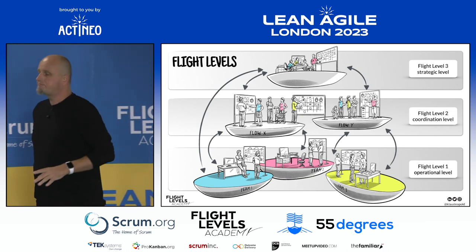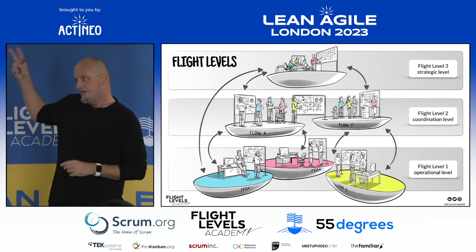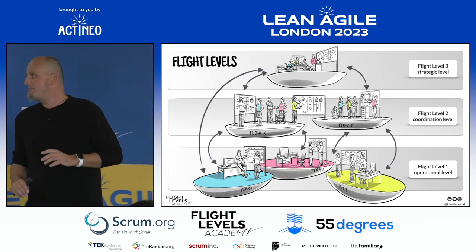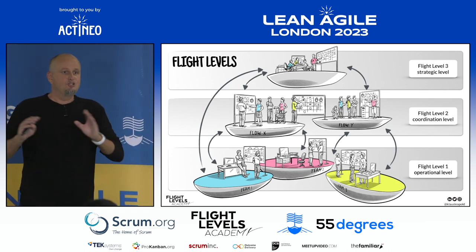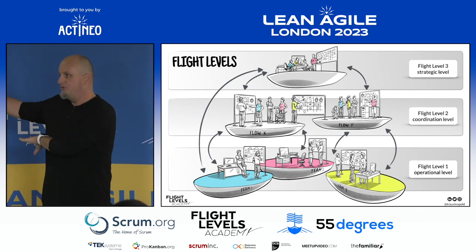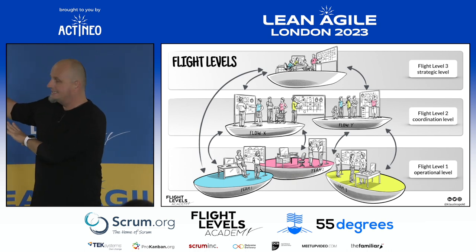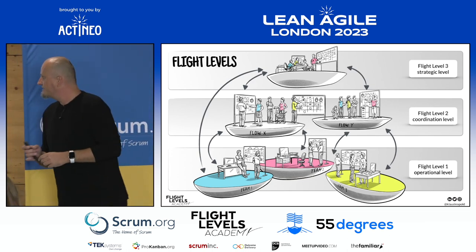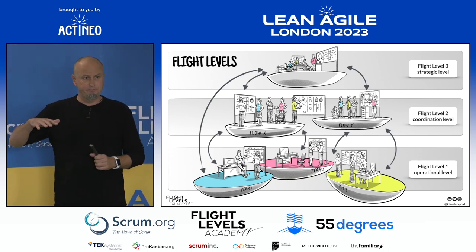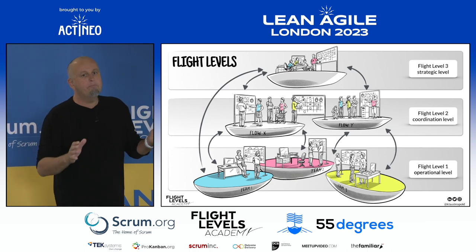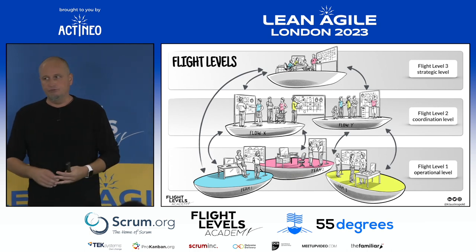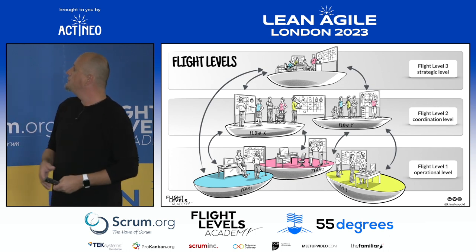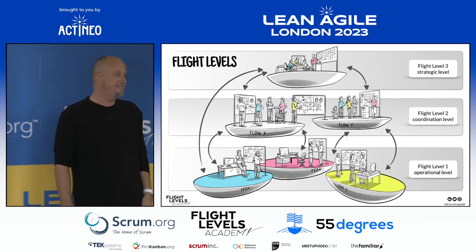There are two common misunderstandings when people see this picture. One is thinking you can map your org chart directly to these flight levels — that's not the case. If you think you can, please come to our booth and let's have a conversation. The second misunderstanding is that flight levels has something to do with hierarchies. You don't need any company structure at all to implement Flight Levels. If there is an organizational structure you can use it, but you don't need it.